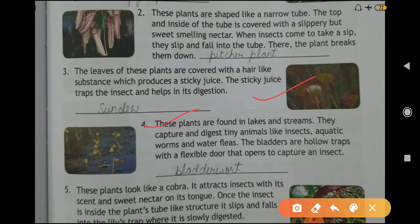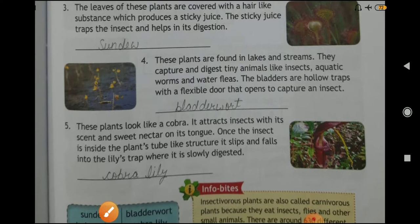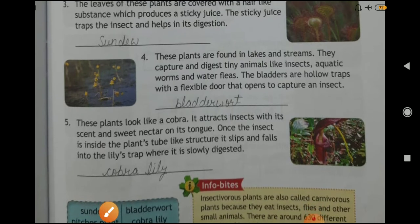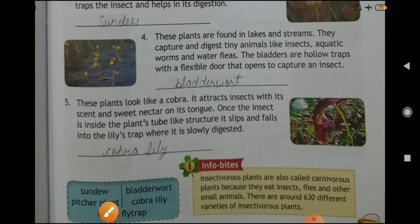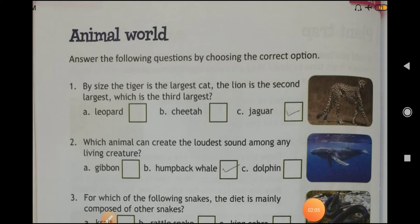The bladders are hollow traps with a flexible door that opens to capture an insect. Answer: Bladderwort. Question number five: these plants look like a cobra. It attracts insects with its scent and sweet nectar on its tongue. Once the insect is inside the plant's tube-like structure, it slips and falls into the lily's trap where it is slowly digested. Answer: Cobra Lily.